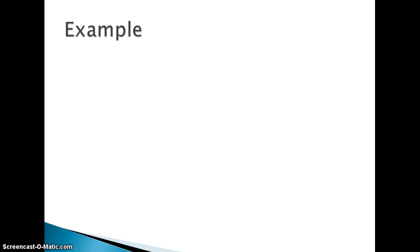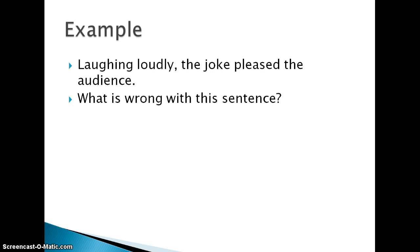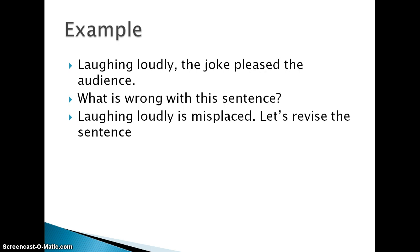Now let's go over some examples. Here's an example of a misplaced modifier: "Laughing loudly, the joke pleased the audience." Now if you read that sentence, you might realize it doesn't make much sense, because we're not clear who is laughing loudly — is it the joke, or is it the audience? The words "laughing loudly" are misplaced, too far away in the sentence from the actual word that's being described.